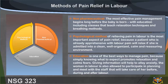Methods of pain relief in labor — non-pharmacological: the most effective pain management begins long before the baby is born, with education including classes that teach relaxation techniques and breathing methods. The psychological method of relieving pain in labor is the most important aspect of pain relief, because a patient who is already apprehensive will relax if she is admitted into a clean, well-organized, calm, and reassuring environment. Education is one of the best ways to manage pain because simply knowing what to expect promotes relaxation and calms fears.